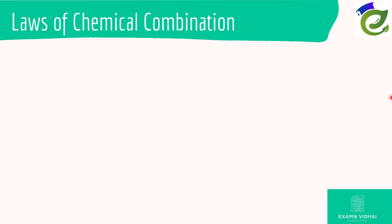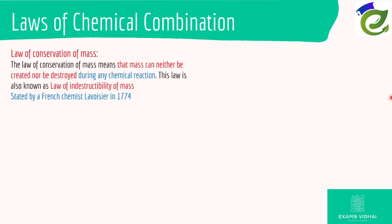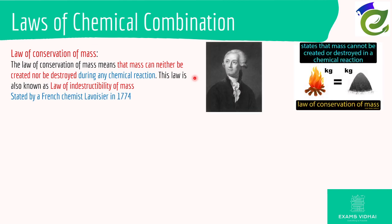Now for the laws of chemical combination, the first law we will learn is the law of conservation of mass. The mass is constant, it is conserved. Whenever a reaction takes place, the mass of the reactants will be equal to the mass of the product. You have this scientist who stated this law, his name is Lavoisier, and you will learn about him in later stages. You have a bonfire burning, let's say one kilogram of bonfire, you will get one kilogram of ash with no change in mass. This is basically conservation of mass.